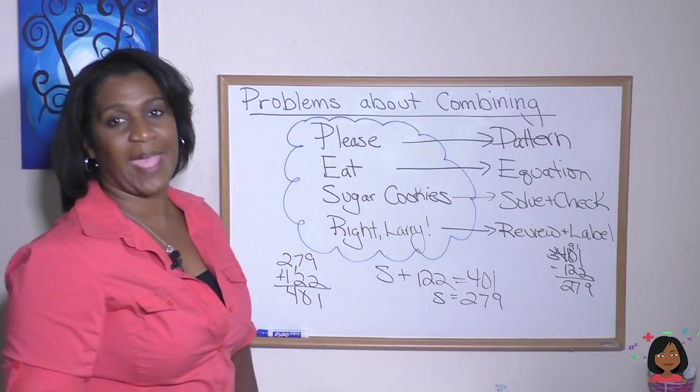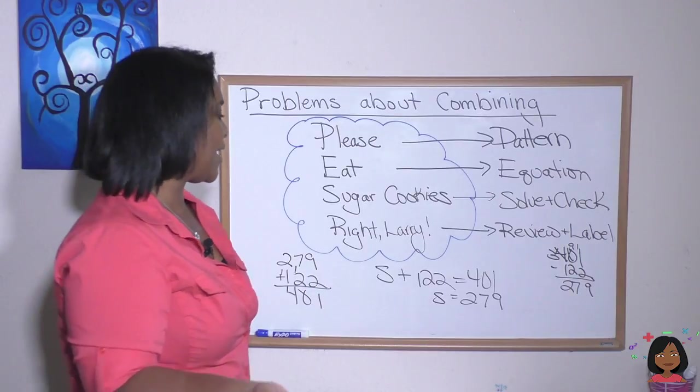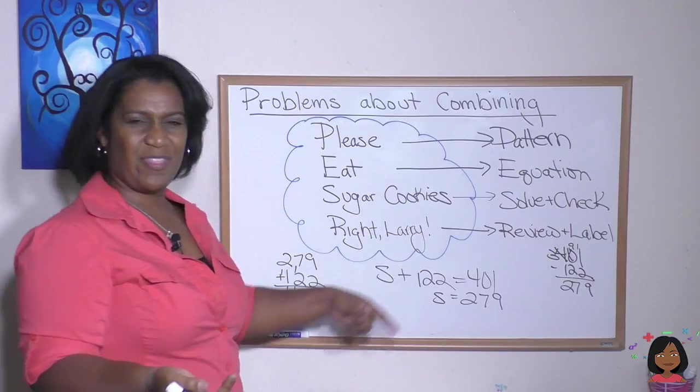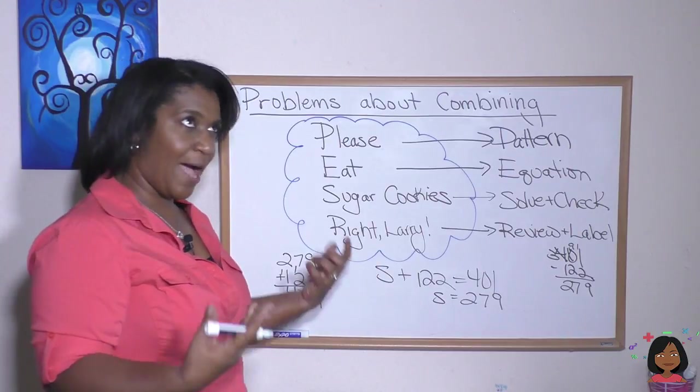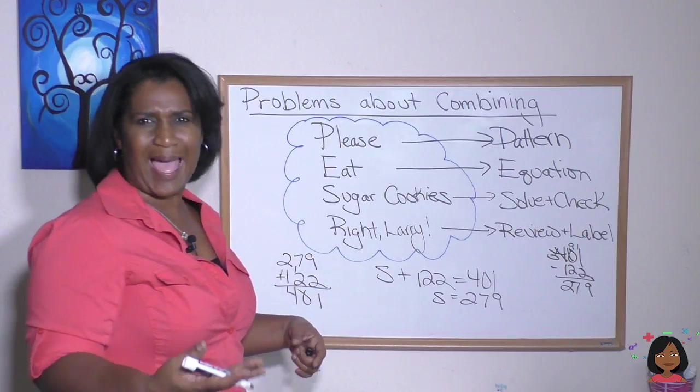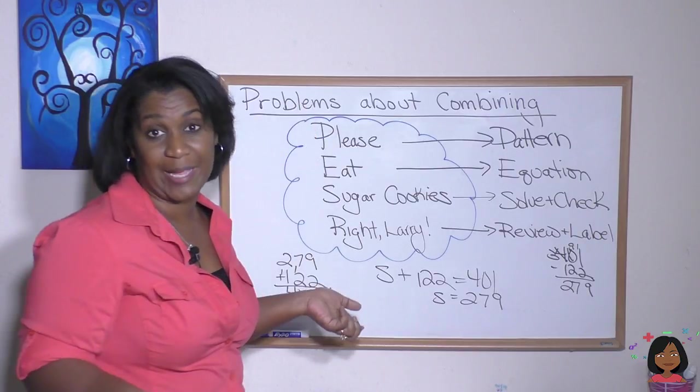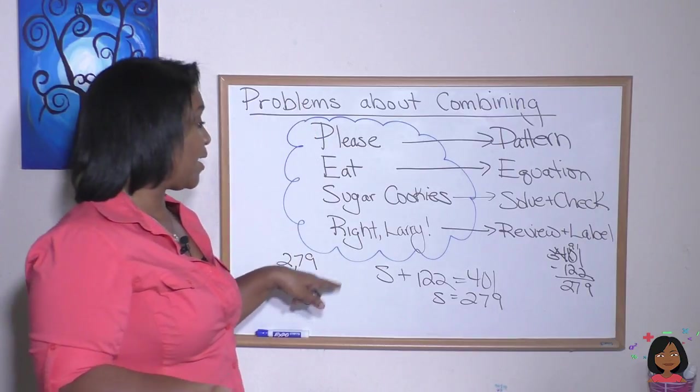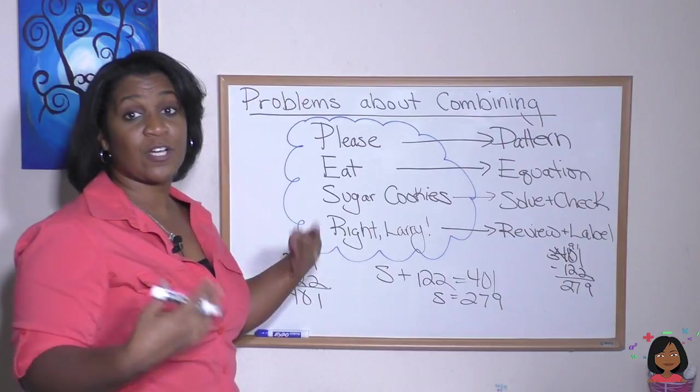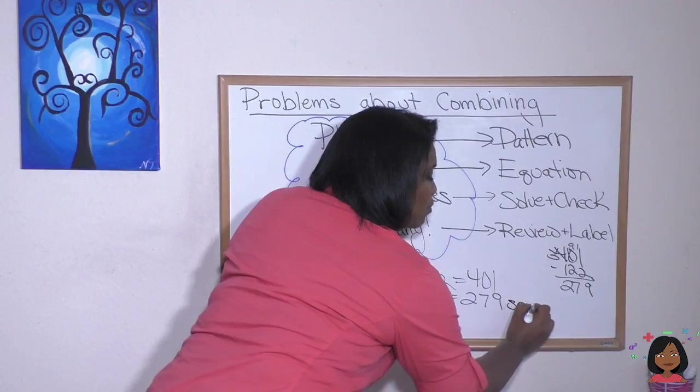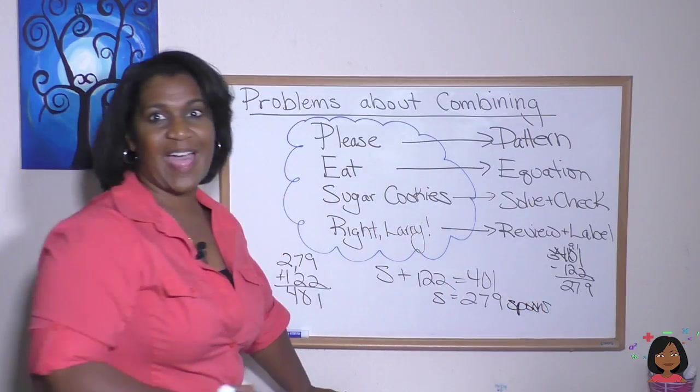Our last step review and label. So does it make sense that there were around 279 spoons in the sink? Then they added 122. Now I'm up to 401. Yeah, that makes sense. We're just doing a quick check to make sure there isn't some crazy outlandish result. And we're going to label it. The S stood for spoons. So our answer is 279 spoons. And that's it.